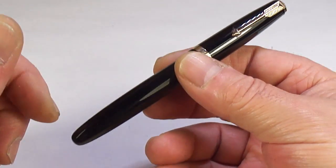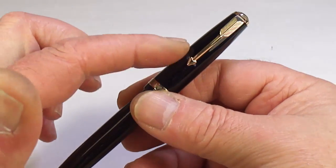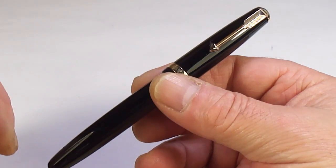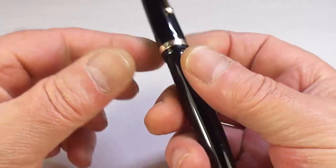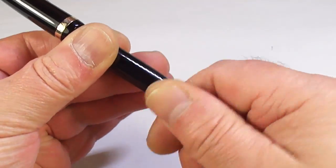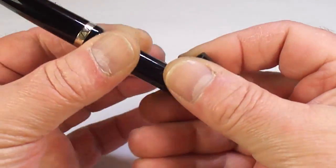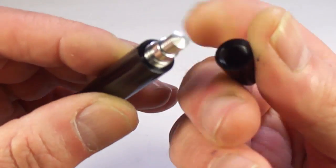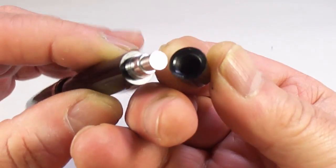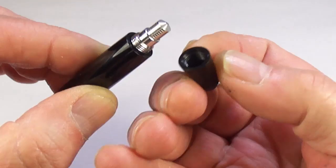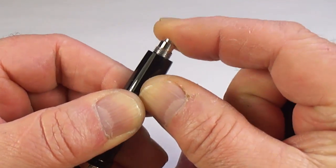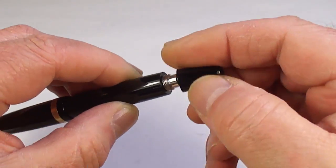Although saying that, the nib is slightly earlier. This is the Parker Duofold AF which means it's got this aluminum filler here, and what we do is simply press that to fill the pen.